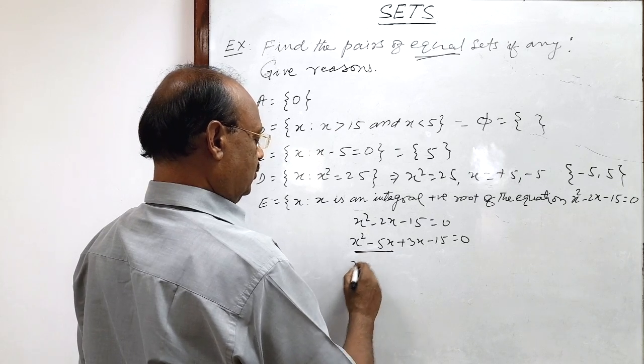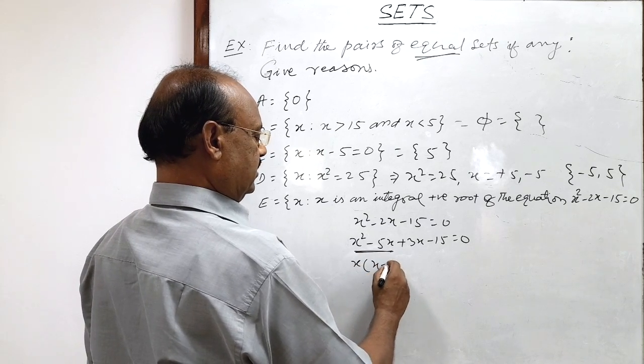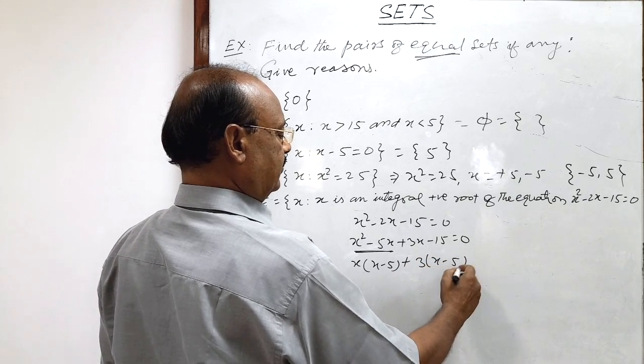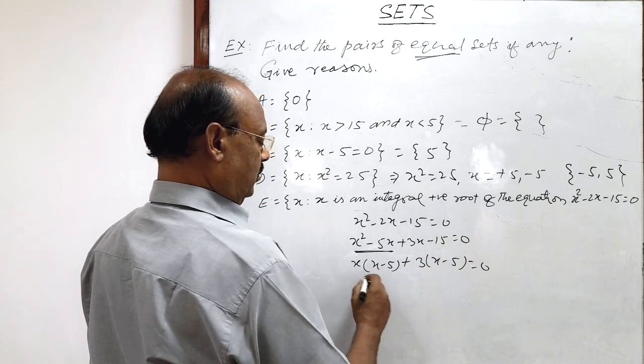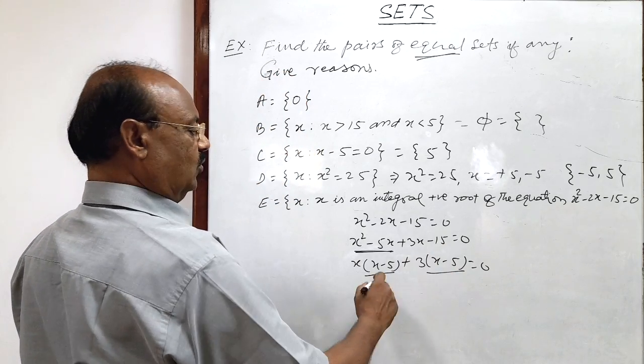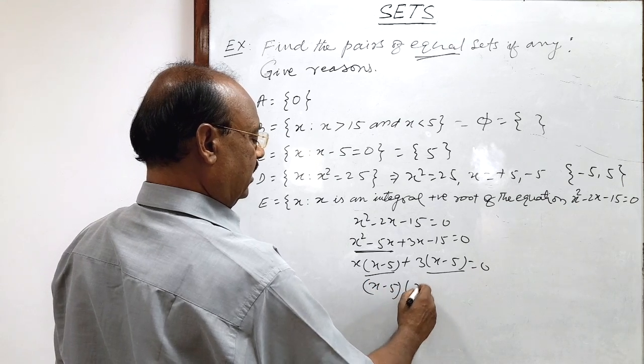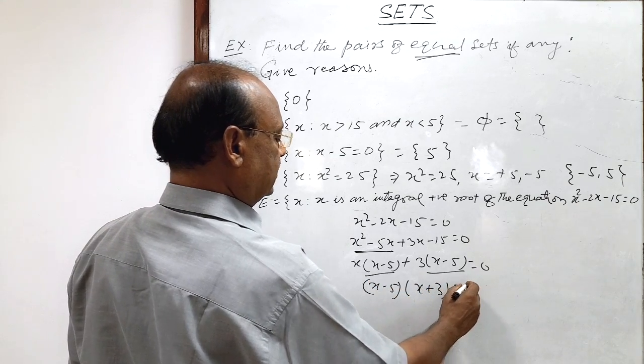Taking x common from these two terms here x minus 5 plus 3 will be common here x minus 5 is equal to 0. From these two terms x minus 5 are available in both the terms so x minus 5 will be common and here x plus 3 is equal to 0.